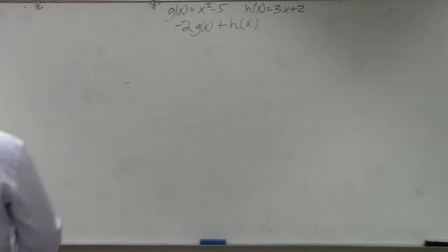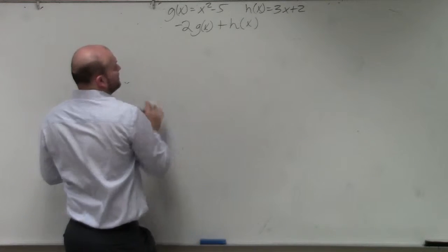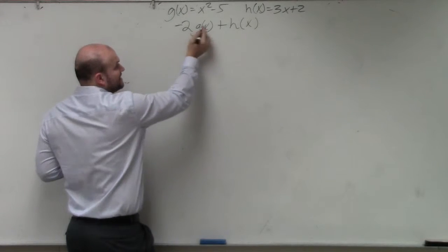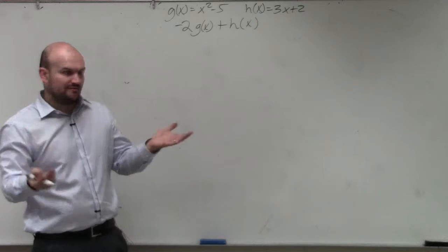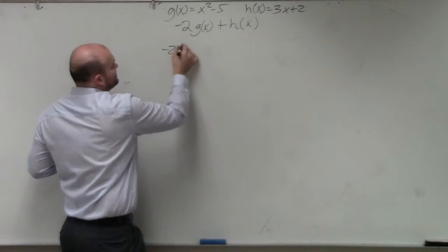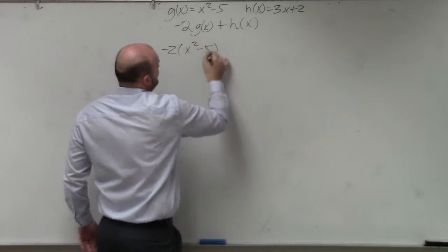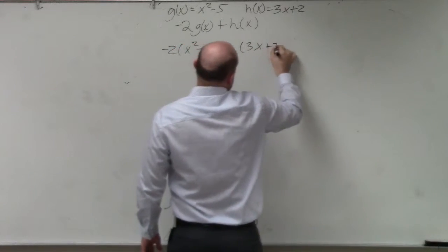Ladies and gentlemen, now what we have is a number being multiplied by a function. So the best thing I'm going to do is just replace my function names with actually their functions. So this would be negative 2 times x squared minus 5, plus h of x, which is 3x plus 2.